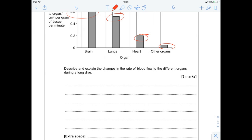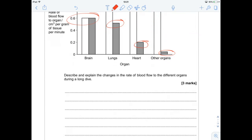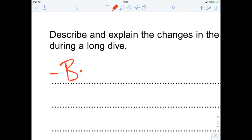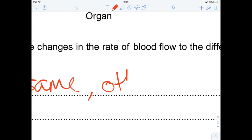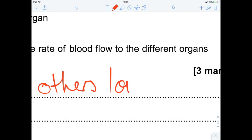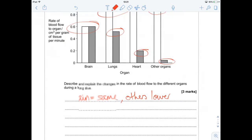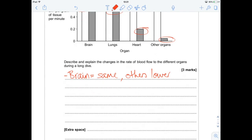Right. First mark. We'll say that the brain is the same. Brain has the same blood flow. Nice. Whereas the others fall. So the other organs get a lower rate of blood flow. Nice and straightforward.